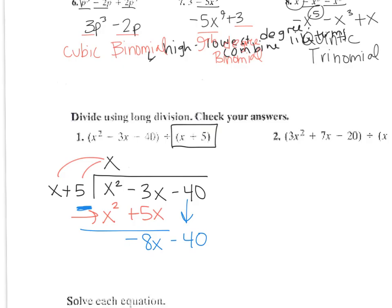So then next, you would do x times what is negative 8x? What could I write right here to multiply by x to get negative 8x? So it's negative 8.